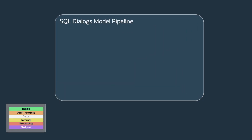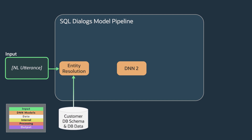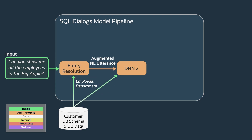The SQL Dialogs model is a pipeline that contains two deep learning models. The input natural language utterance and the database schema are processed through an entity resolution model, which picks out the key named entities inside the user utterance and then links them to database schema elements and also database values in the customer database. That information forms the augmented natural language utterance, which is then fed into the deep learning semantic parser model.